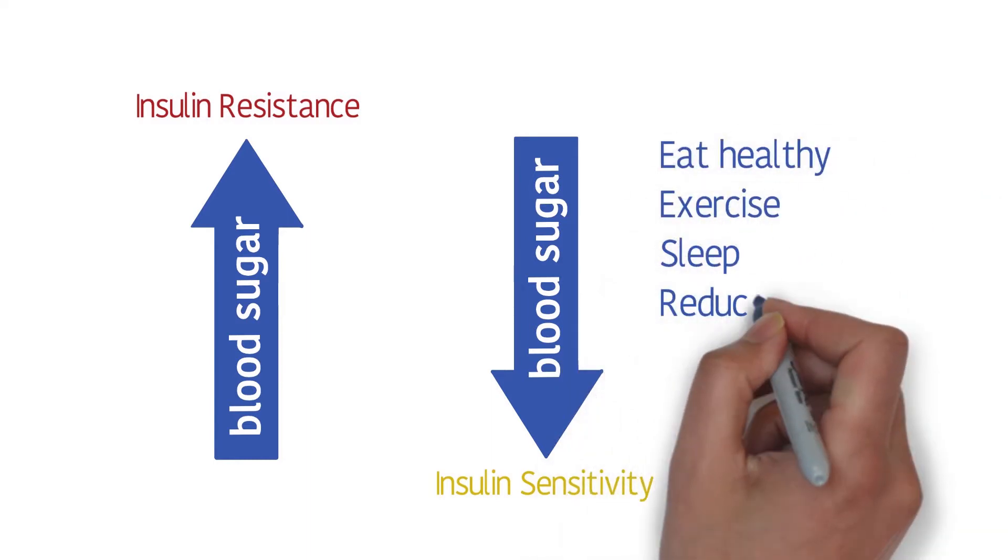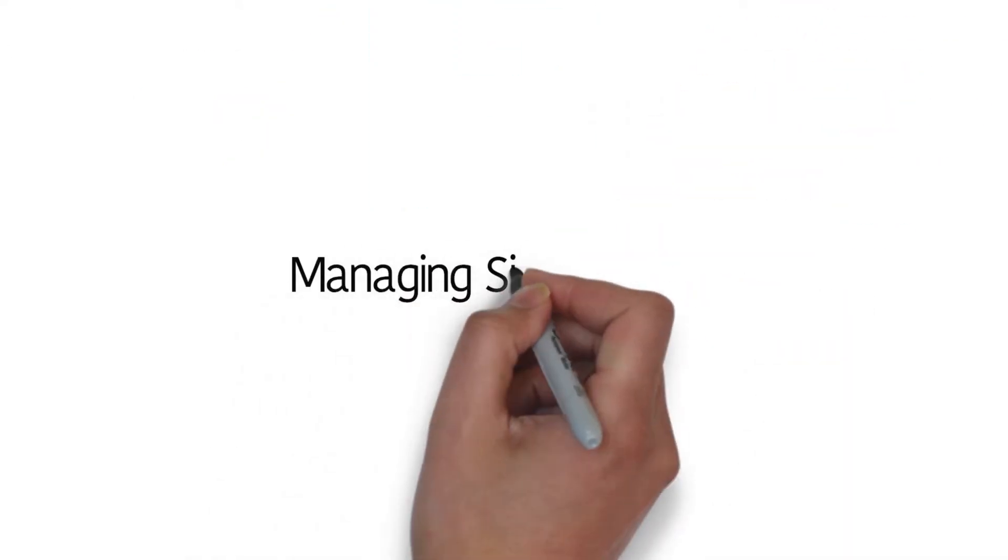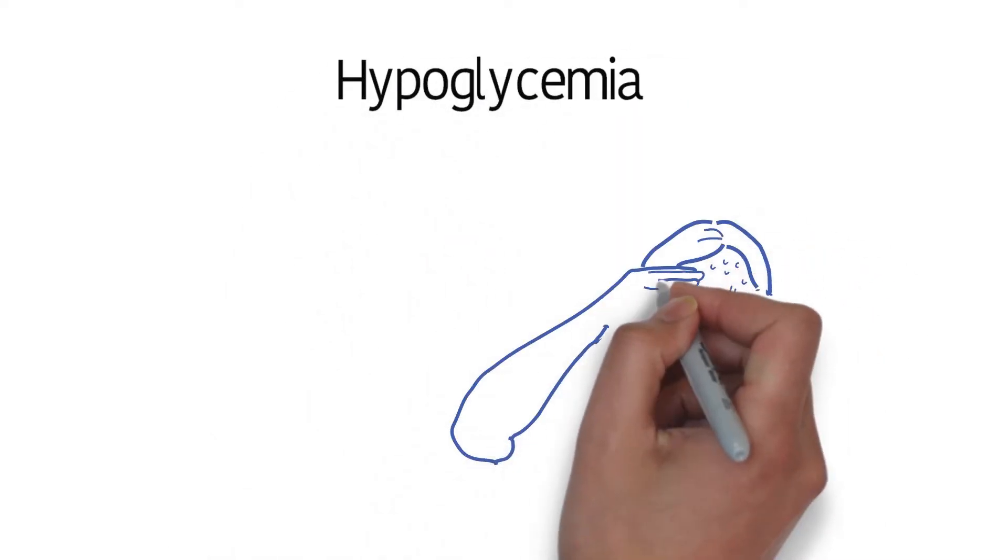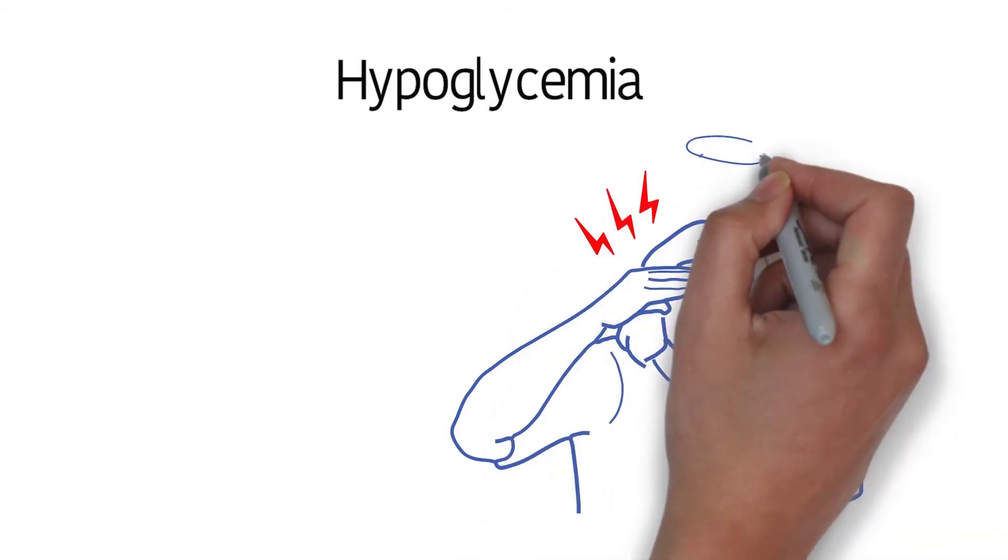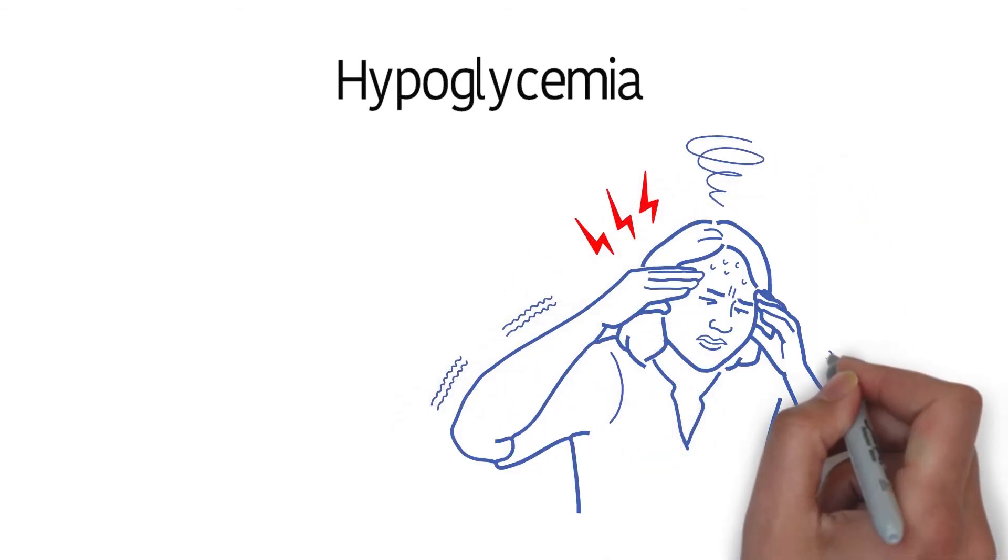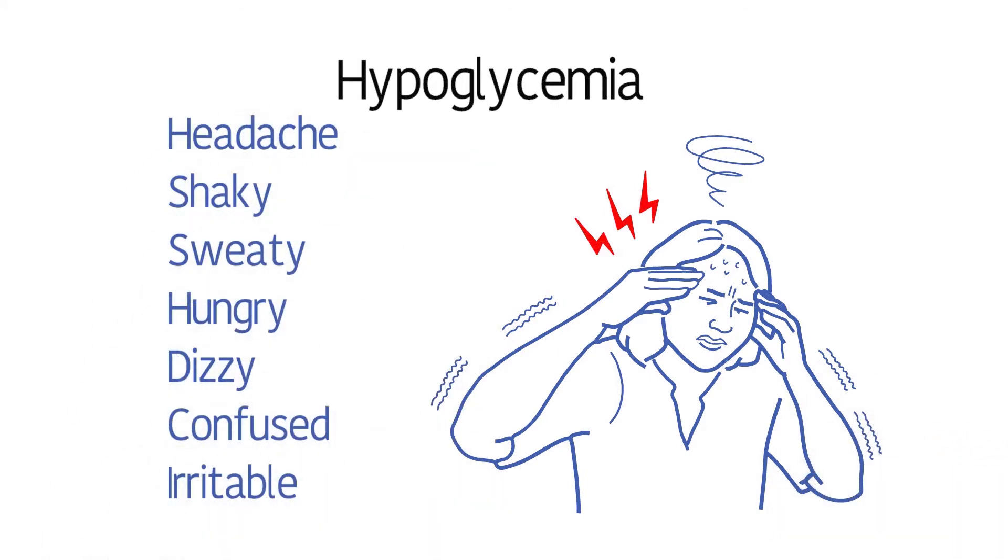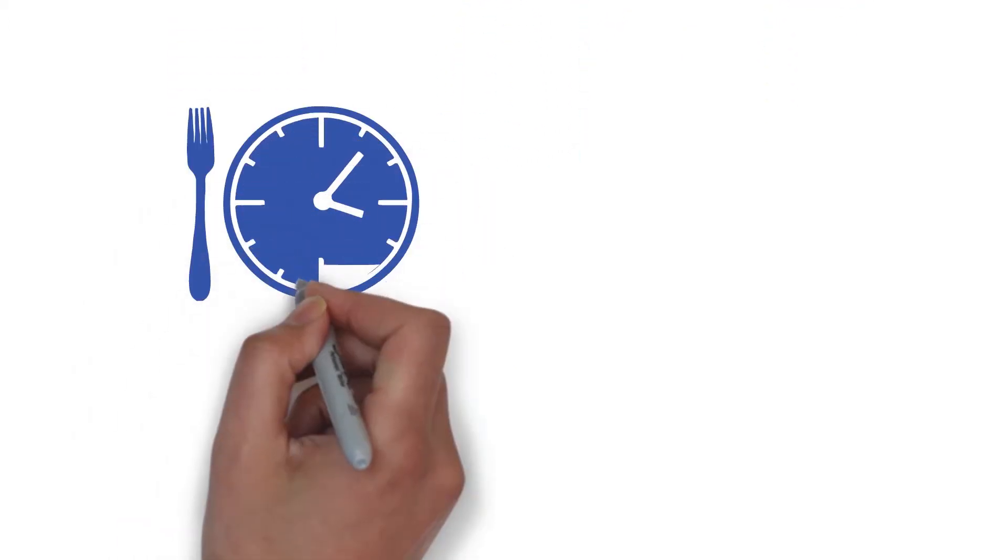One side effect of using insulin is hypoglycemia. Hypoglycemia, or low blood sugar, happens when your level goes below 70 milligrams per deciliter. It's always important to check your blood sugar often to spot hypoglycemia. Untreated hypoglycemia can lead to severe effects.